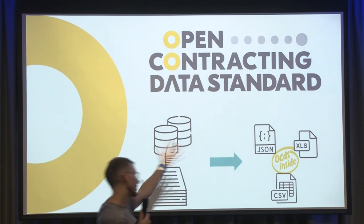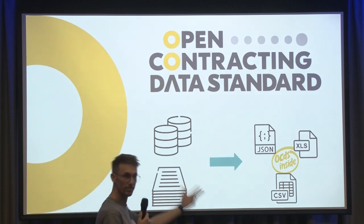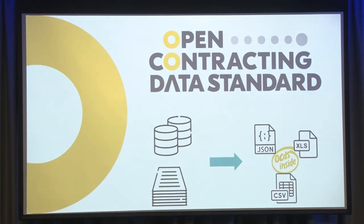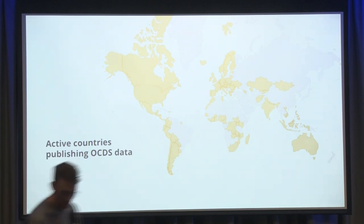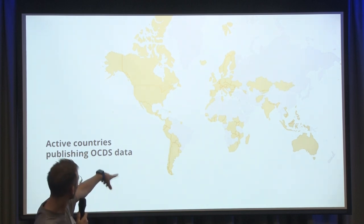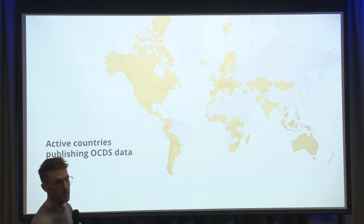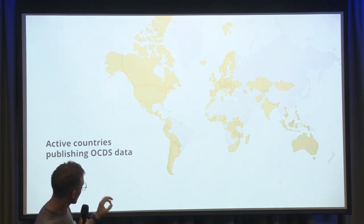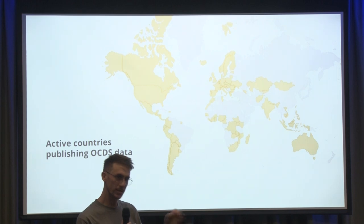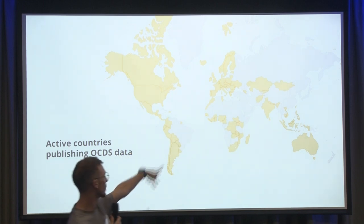JSON is the official format for the OCDS, the Open Contracting Data Standard, but some partners are also publishing in XLS and CSV format. Over 50 countries around the world are publishing their data under the OCDS. Most Latin American and North American countries are publishing their contracting data under the OCDS — not only at the national level, but also at the subnational level, and some individual agencies too. This also happens in Europe, some countries in Africa, and in Asia.